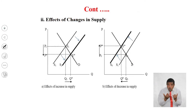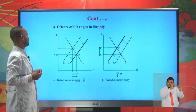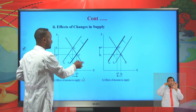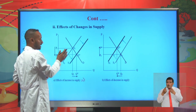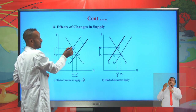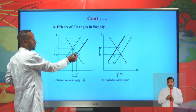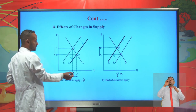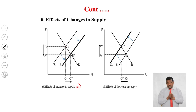Now let's see the effects of changes in supply while demand remains unchanged. This demand curve remains unchanged, but we are going to see the effects of an increase in supply. Increase in supply is represented by a rightward shift of the supply curve from its original position. As a result, the equilibrium quantity shifts from Q1 to Q*, so with an increase in supply, the equilibrium quantity will also increase.